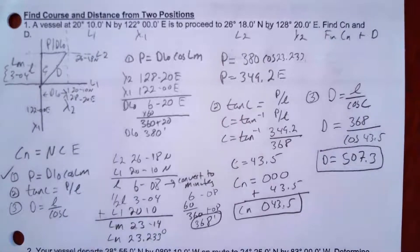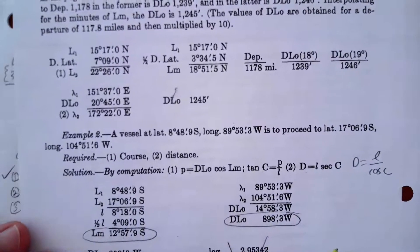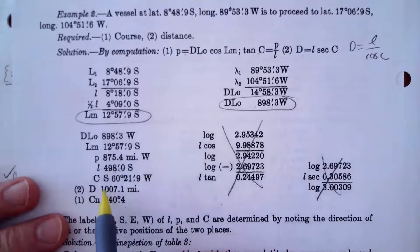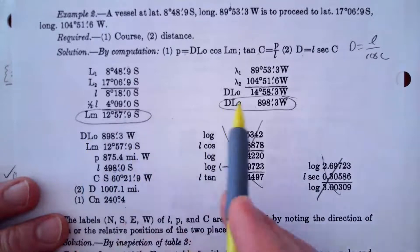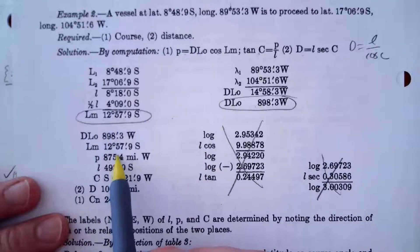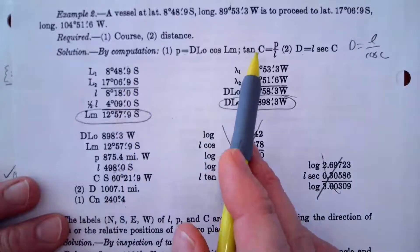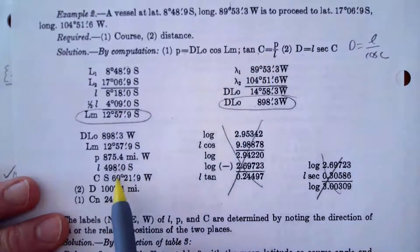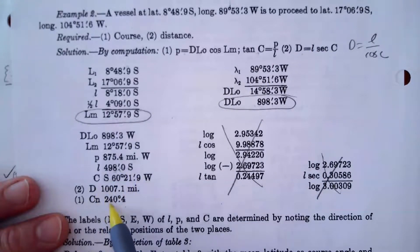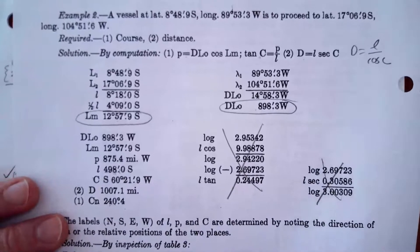Going back to Bowditch, you can see all the same steps: D-low, Lm, calculated P, converted L to minutes, got C, then used that formula to get D, and then converted C to C(N). It's a little cryptic in Bowditch's format, but all those steps are right there.